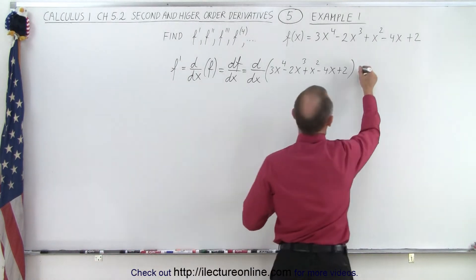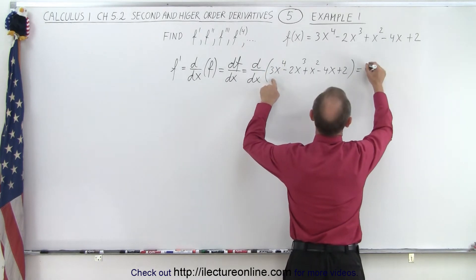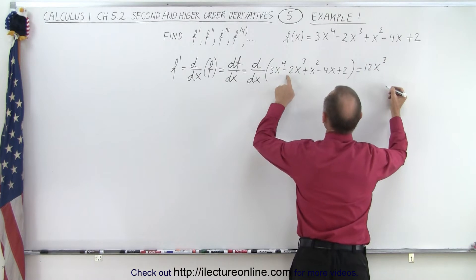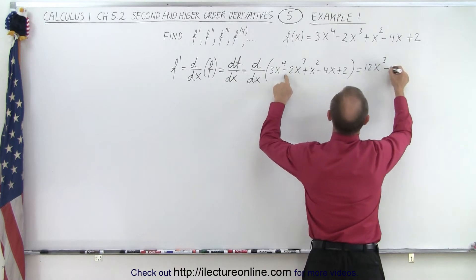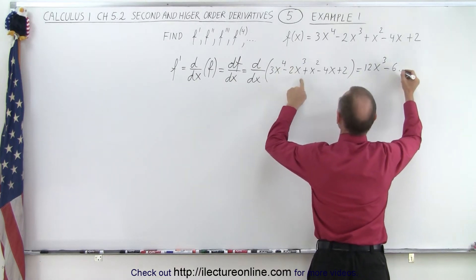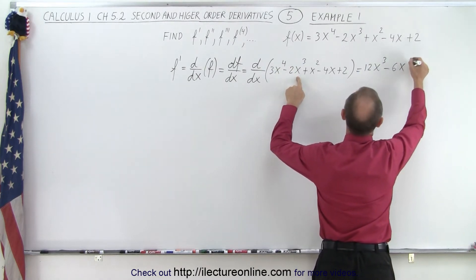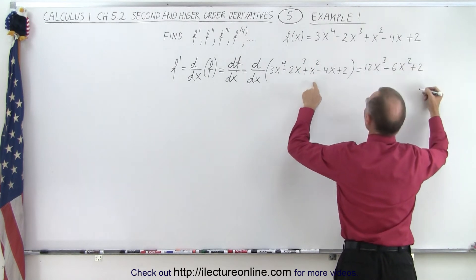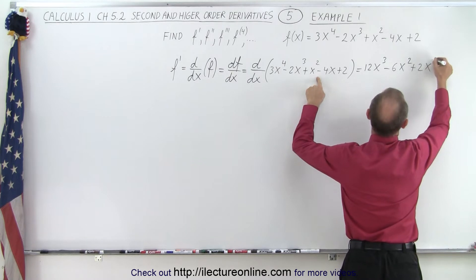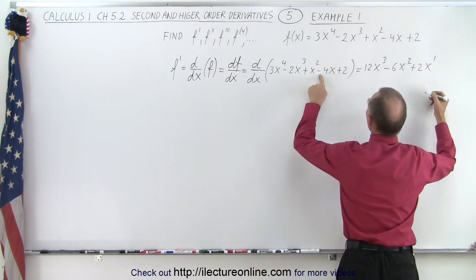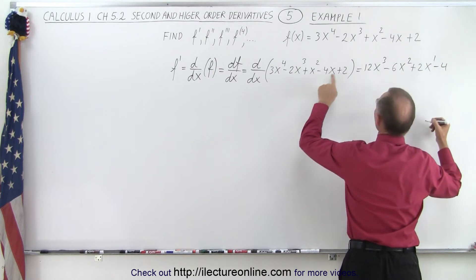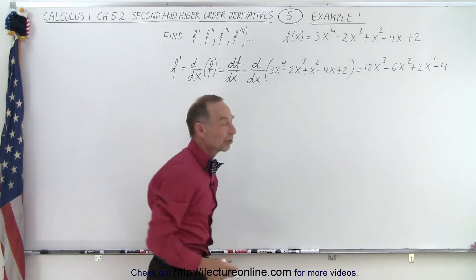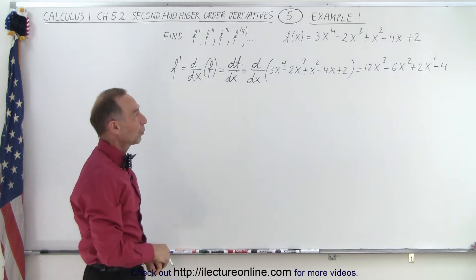When we take the first derivative, we get 4 times 3, which is 12x to the exponent minus 1, which is to the third power, minus 3 times 2, which is 6x to the exponent minus 1, which is the second power. 2 times 1 is plus 2x to the exponent minus 1, and we have minus 4, and then the derivative of the constant 2 is simply zero. So that is the first derivative of our original function.